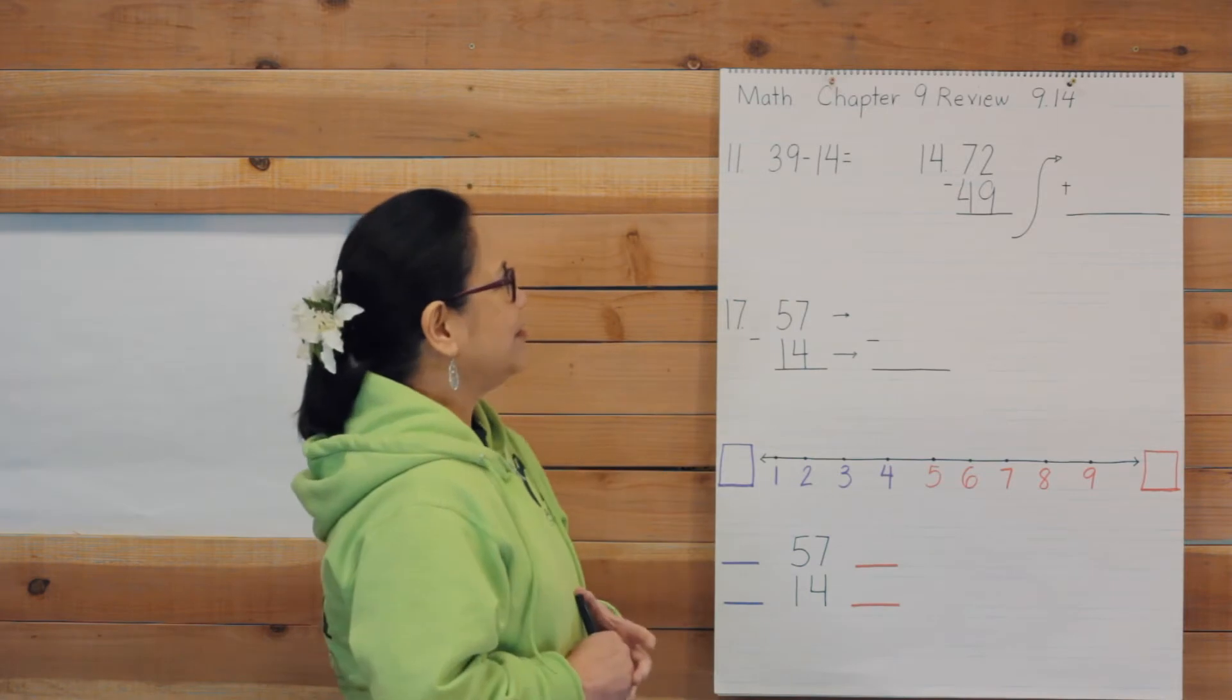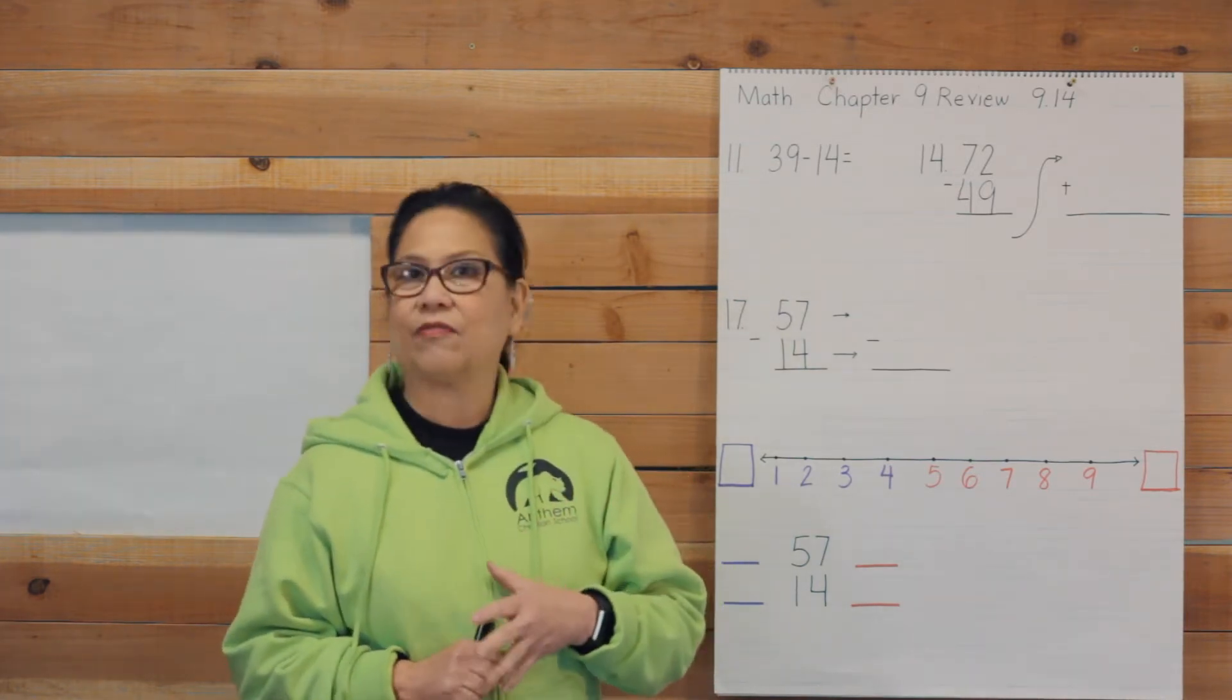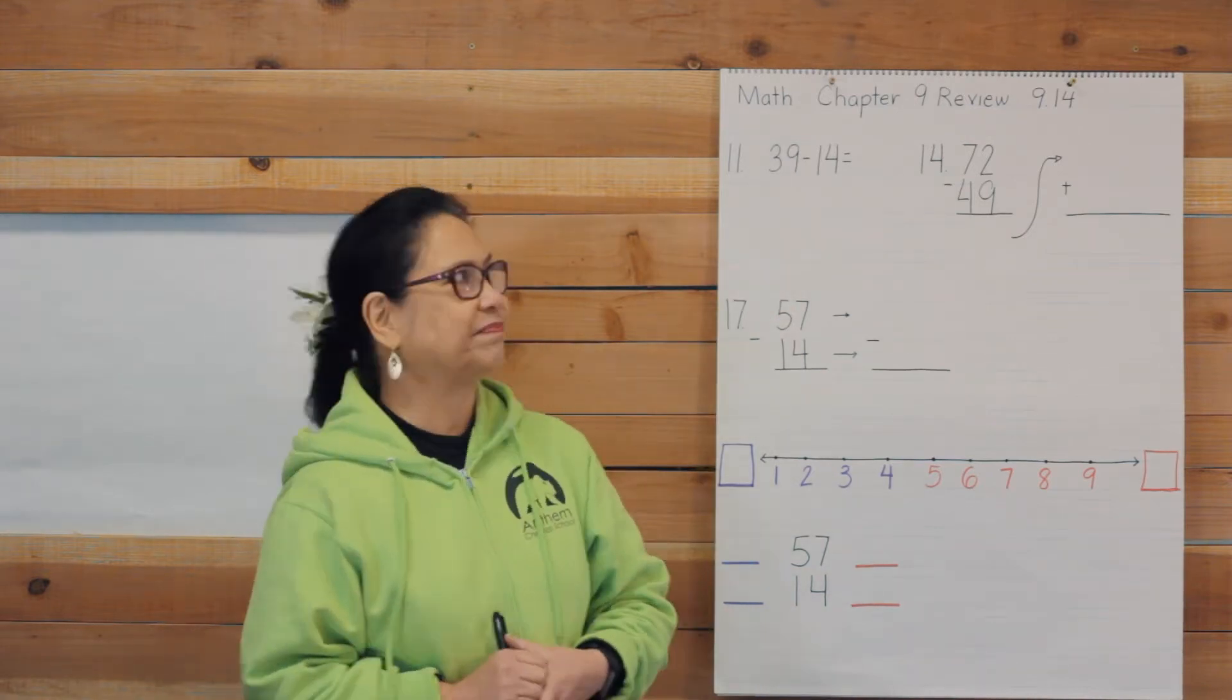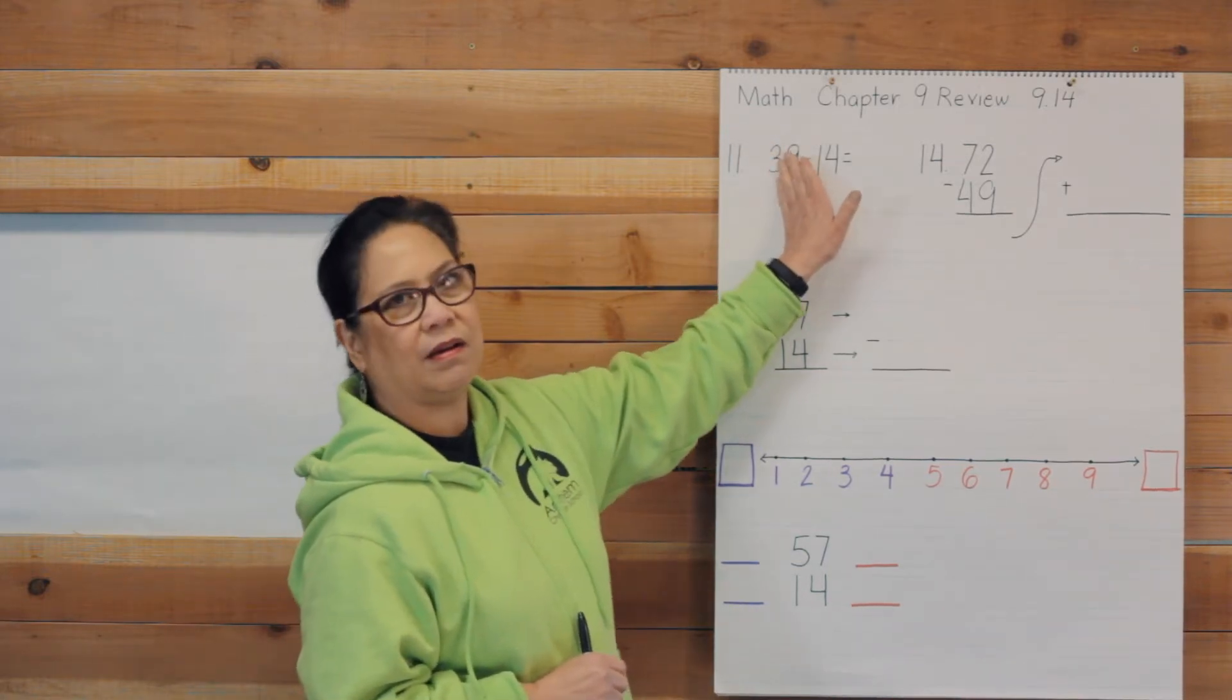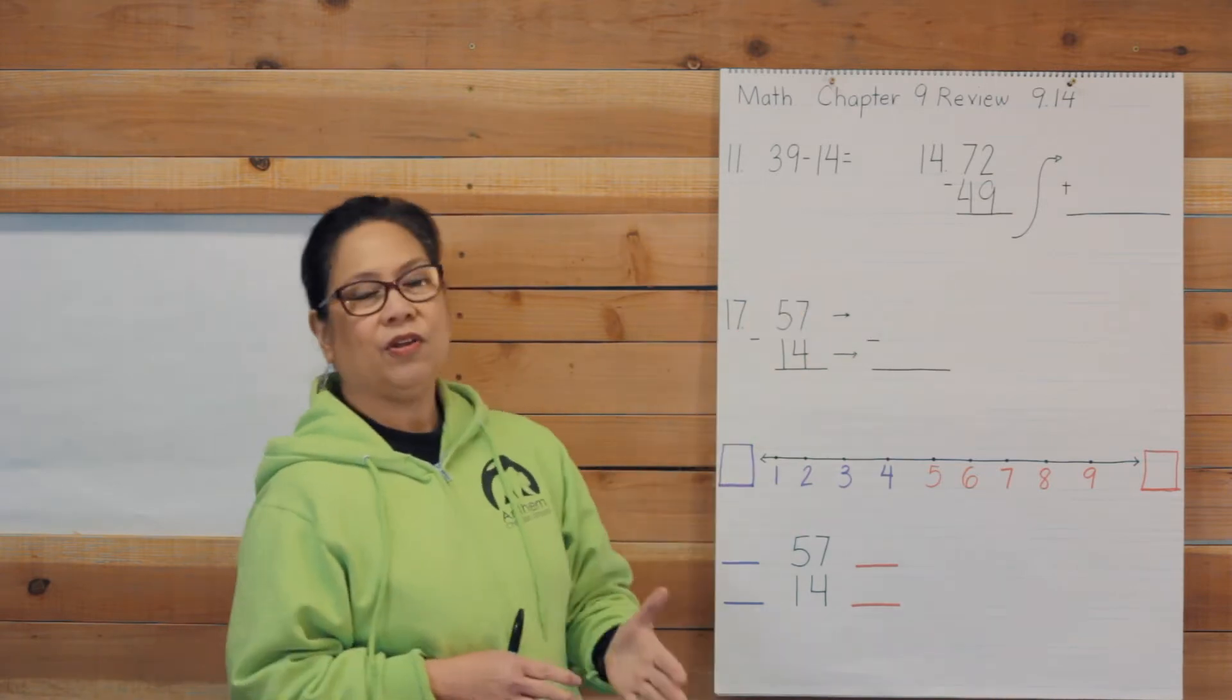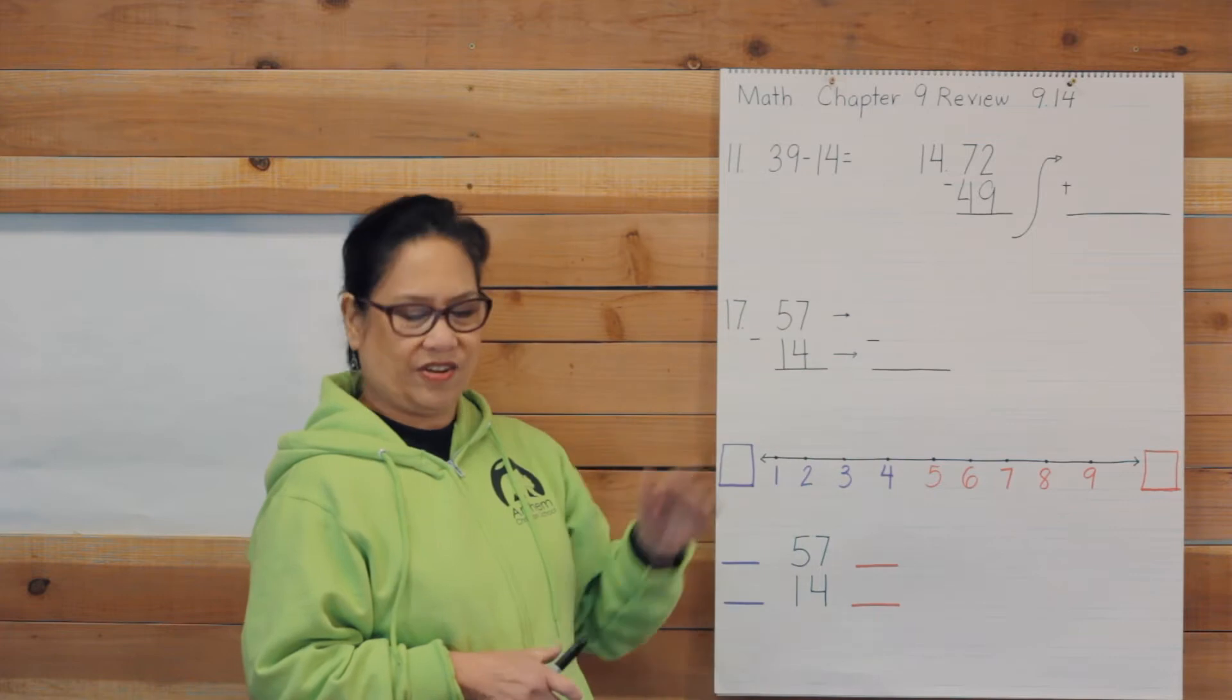All right, let's start. First of all, I think numbers 1 to 10 are very easy for you, so let's skip to number 11. Number 11, you will see that the problem is written across the page. And you know when it's written that way, you have to write it going down, right? Because it's easier that way.